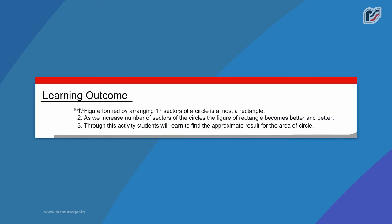Learning Outcome: 1. Figure formed by arranging 17 sectors of a circle is almost a rectangle. 2. As we increase number of sectors of the circles, the figure of rectangle becomes better and better. 3. Through this activity, students will learn to find the approximate result for the area of circle.